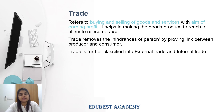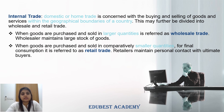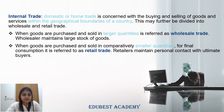Trade is further divided into two parts: external trade and internal trade. Internal trade is that which happens within the geographical boundary of a country. Basically, all buying and selling of goods and services within one country is called internal trade, also known as domestic or home trade. It is of two types: wholesale trade and retail trade. In wholesale trade, goods are purchased and sold in larger quantities, and wholesalers maintain large stocks of goods. In retail trade, comparatively smaller quantities are purchased and sold for final consumption, and retailers maintain personal contact with ultimate buyers.